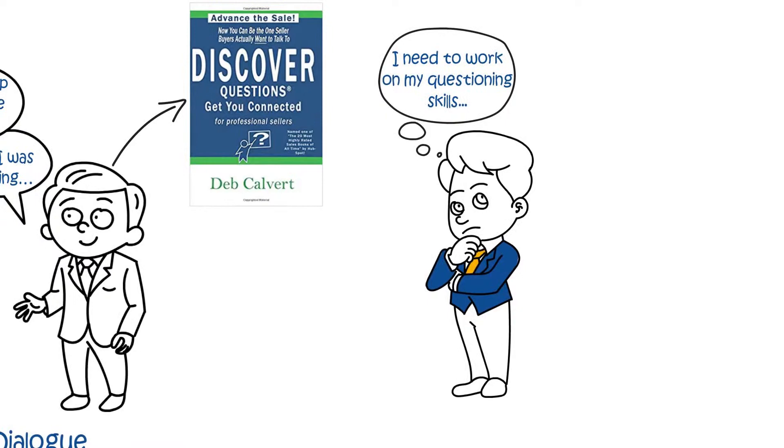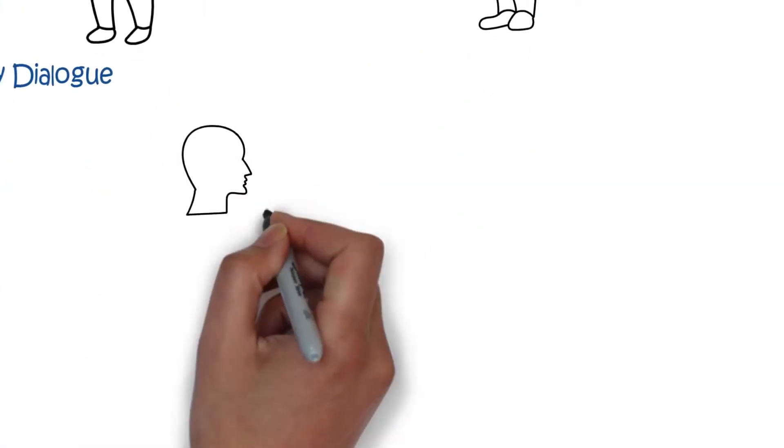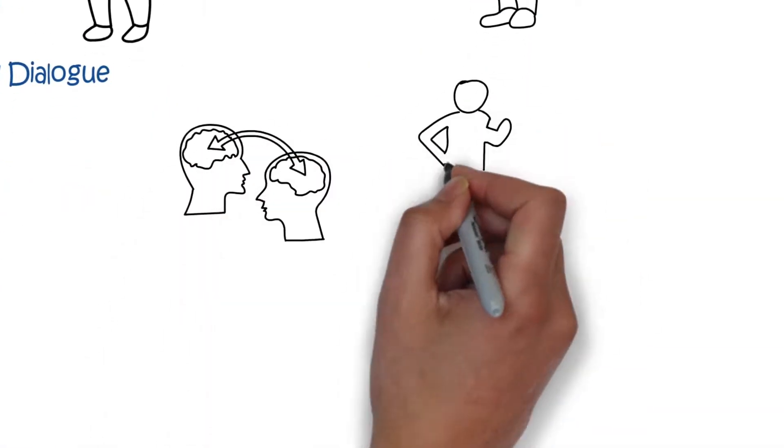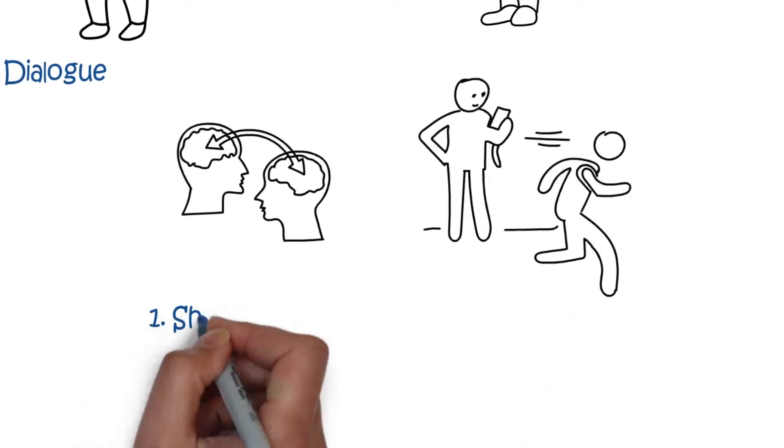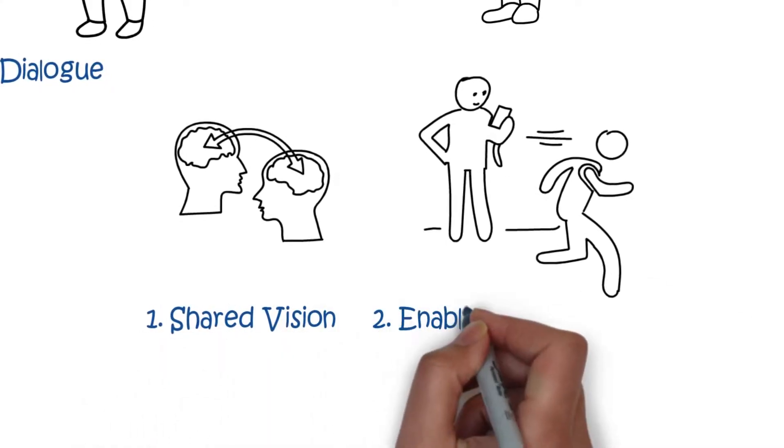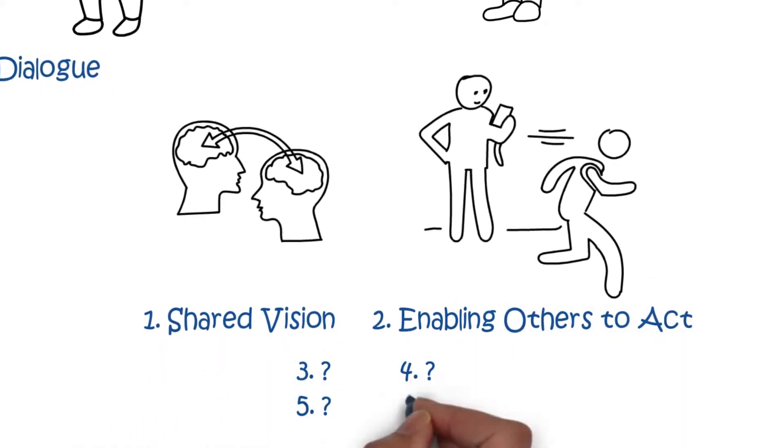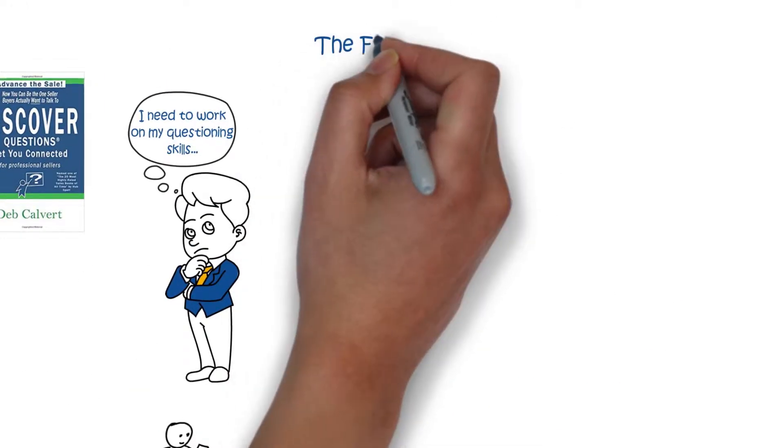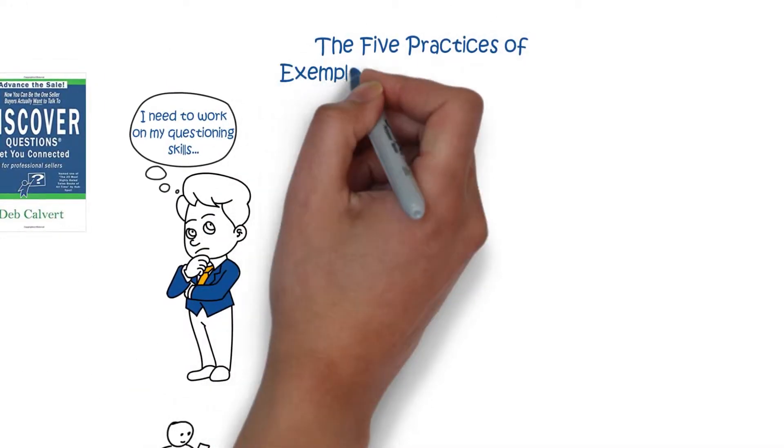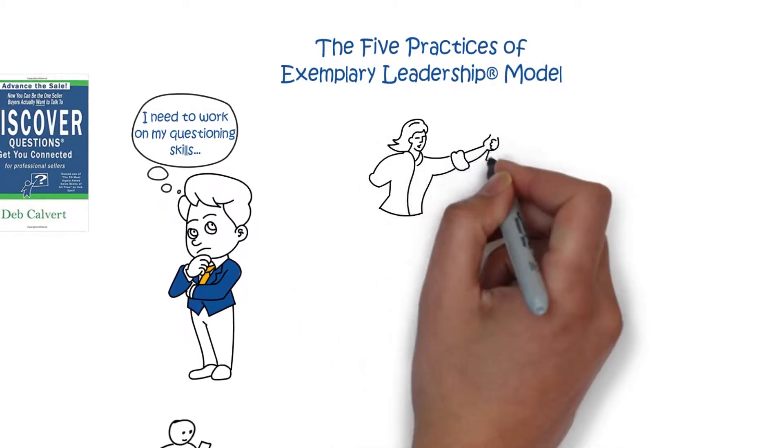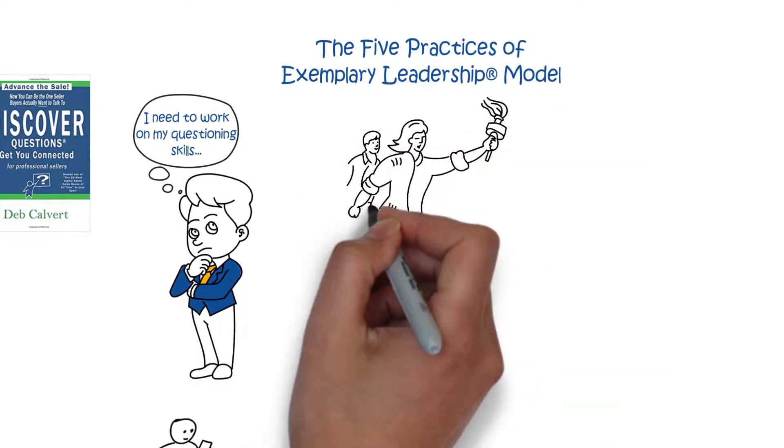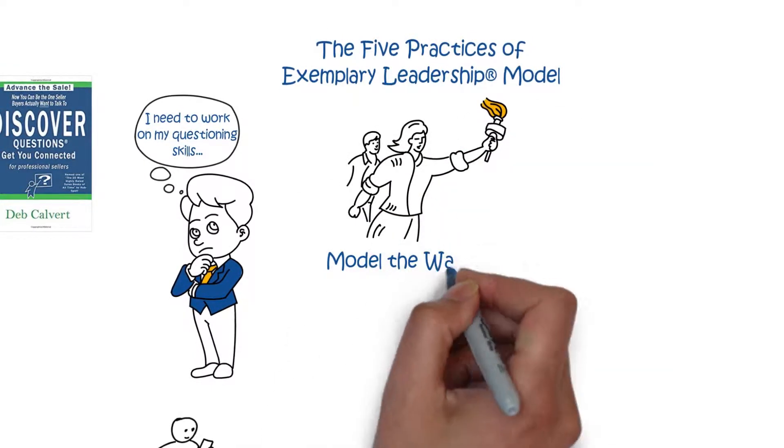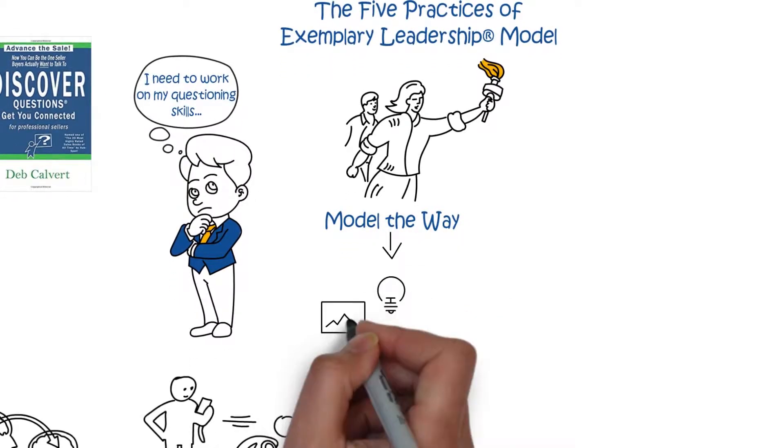Now you had mentioned there were six behaviors. I don't think we did an overview, a shared vision, enabling others to act. What are the other four? Yeah, so there are six behaviors under each practice. The five practices of exemplary leadership are what you're referring to. They are model the way, that means to know your values and to align your actions with your values, to do what you say you're going to do. They're the ones that are most about credibility.